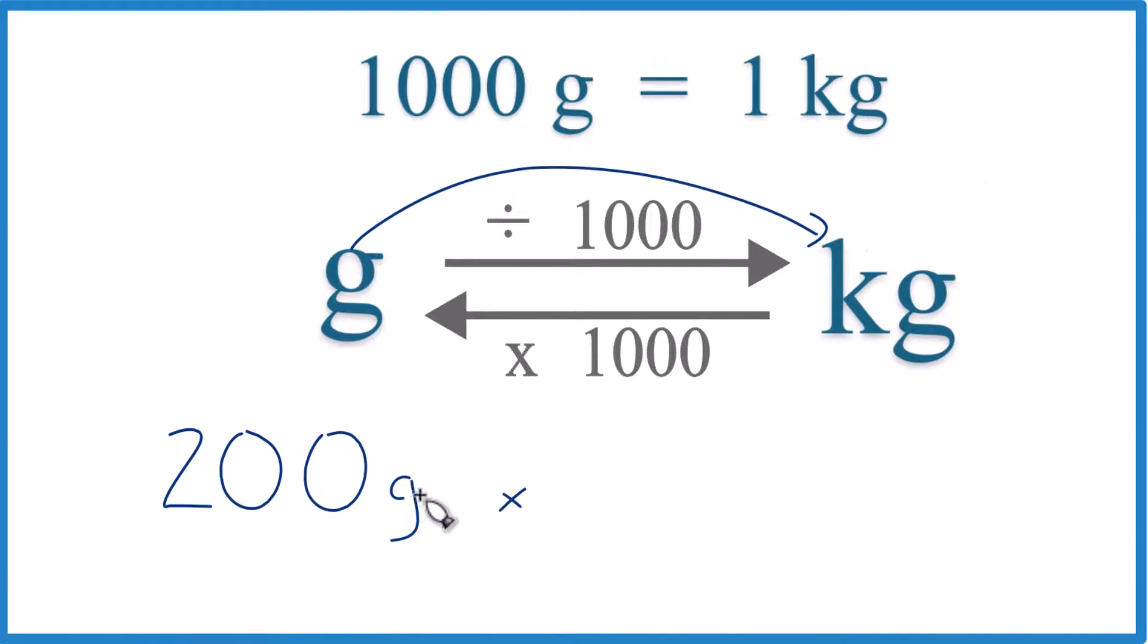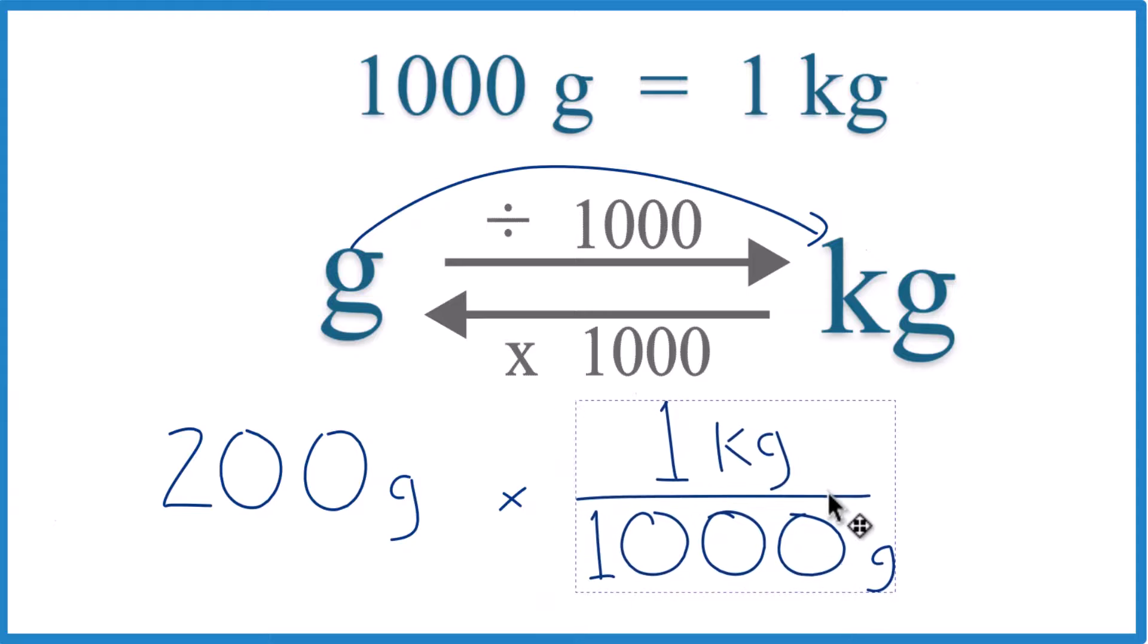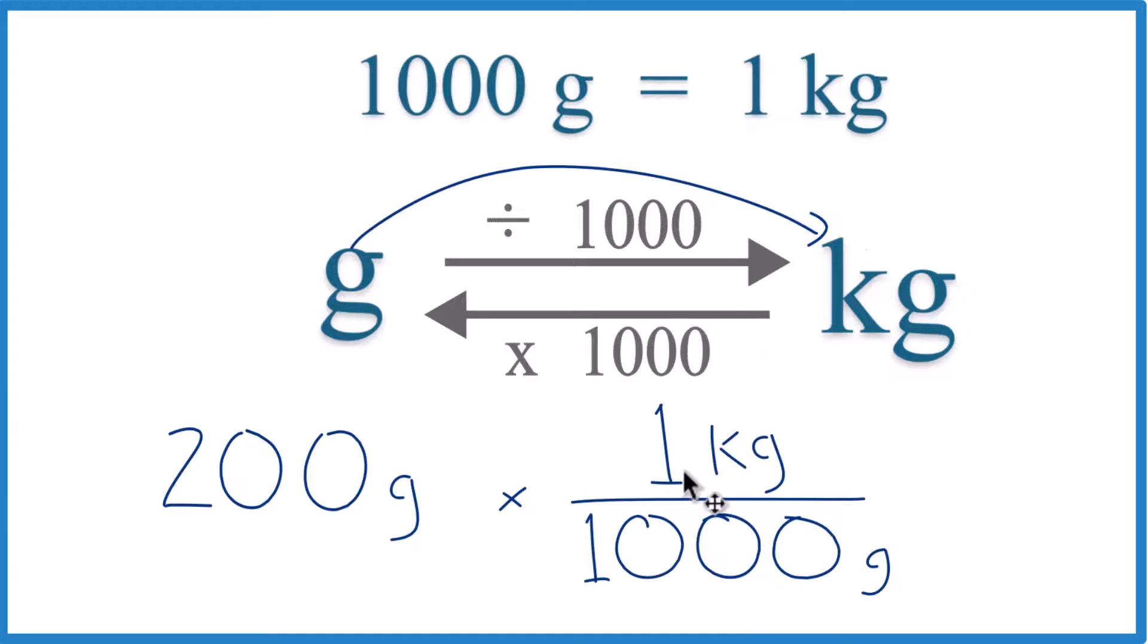So with our 200 grams, grams on top, that means we need to have grams on the bottom so they cancel out. So this will be our conversion factor here. And again, one kilogram is 1,000 grams. That's where we get it from.